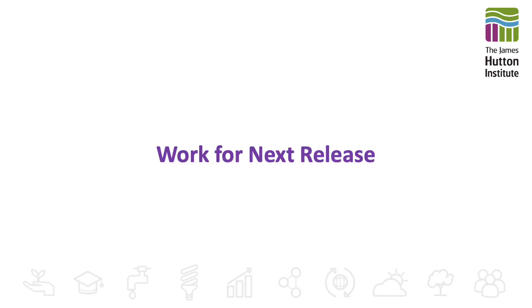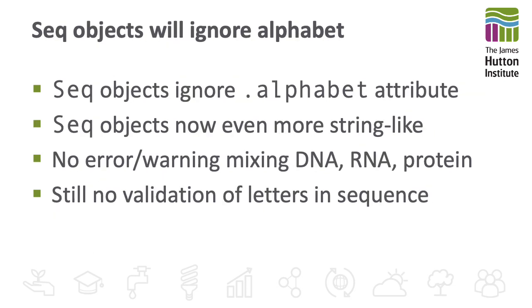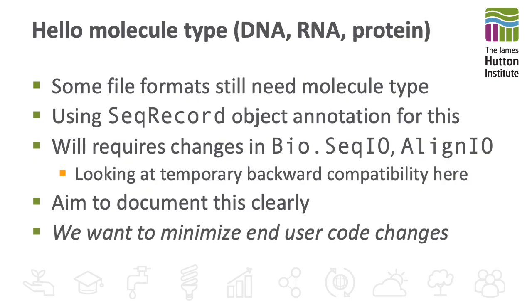I'll now talk briefly about changes in the upcoming release. As announced last year, we're saying goodbye to the BioAlphabet module. Most internal usage has already been removed. The sequence objects will no longer track the alphabet attribute, making them act like a Python string object with additional biological methods and less overhead than before. We will instead record the molecule type as needed in the annotated SeqRecord object. We recognize this will require some changes to end users' code.